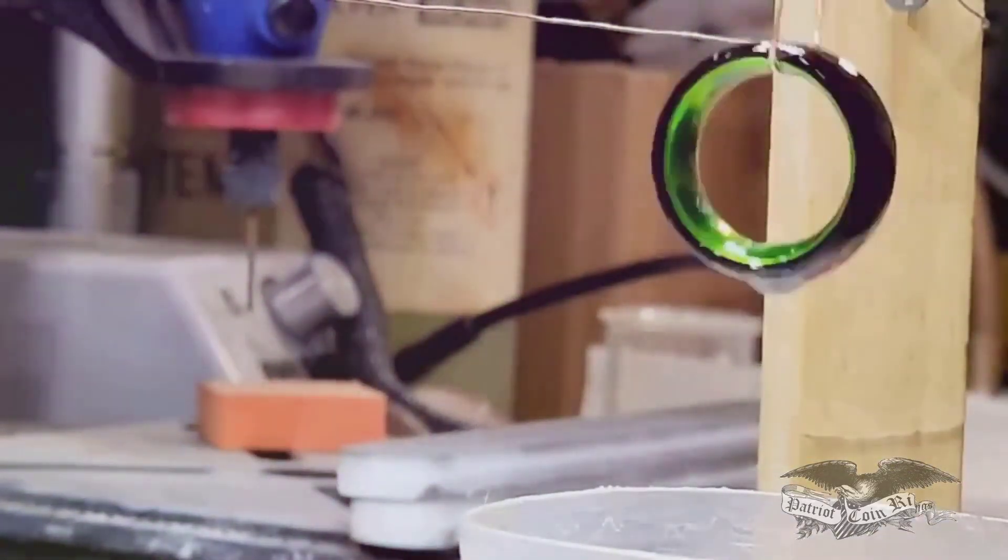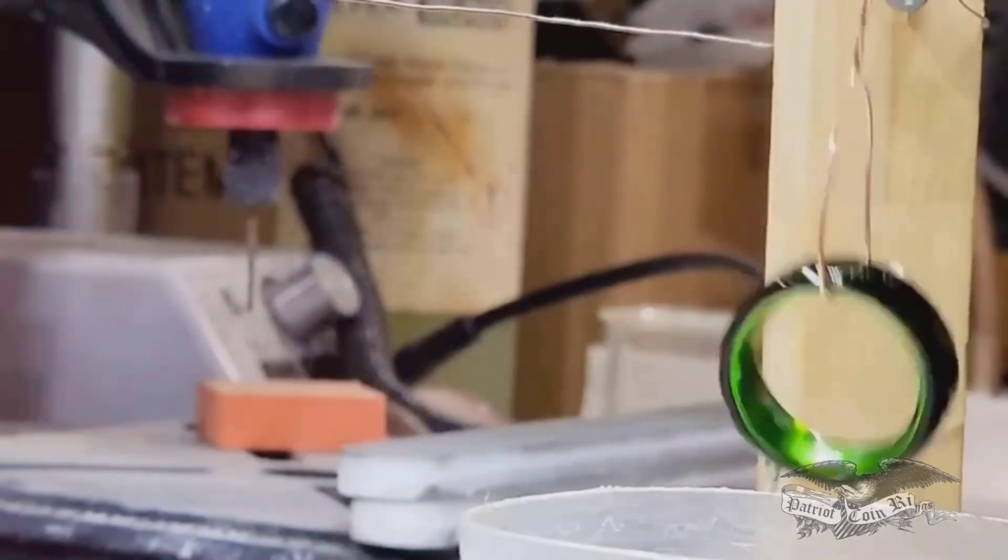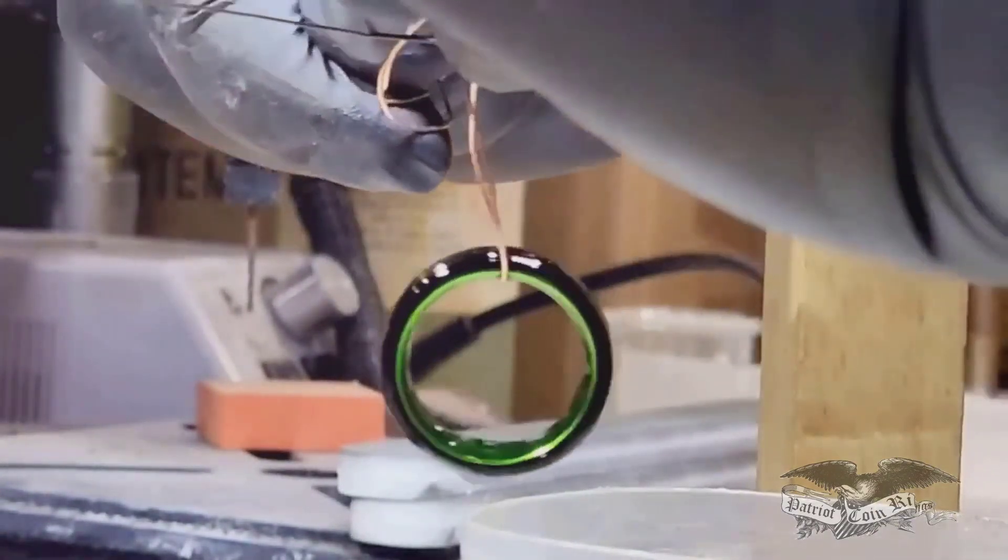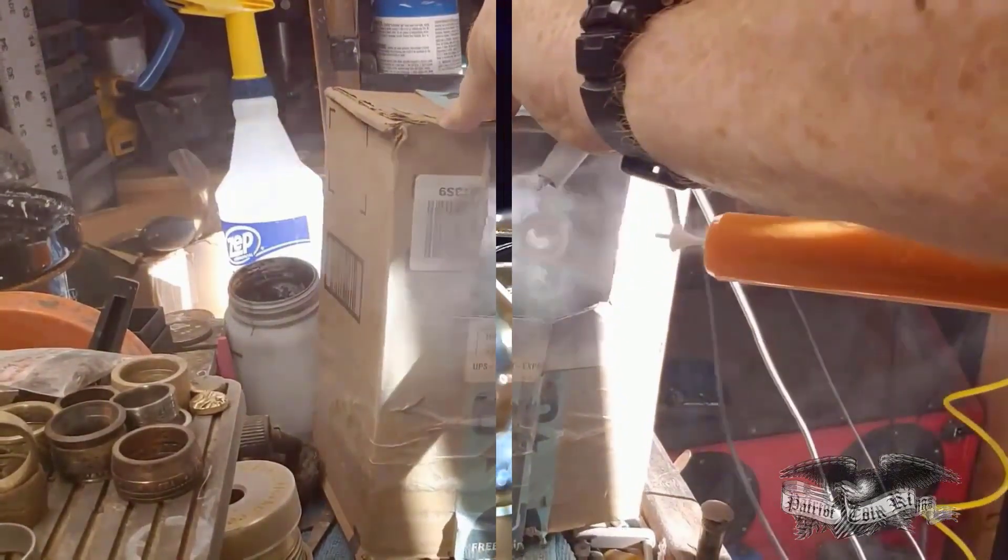99% of the time, a transparent jeweler's clear coat or high-quality jewelry sealer, such as HypoSealer by PatriotCoinRings.com, will be the answer in creating a barrier that stops these reactions in their tracks.